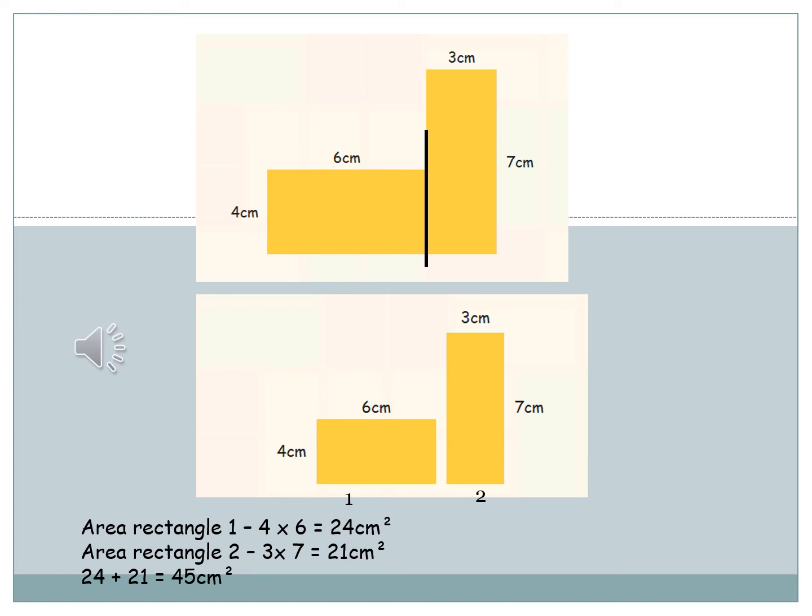Let's do four and six first. So four times six is 24. Add three times seven equals 21. So 24 and 21 equals 45.